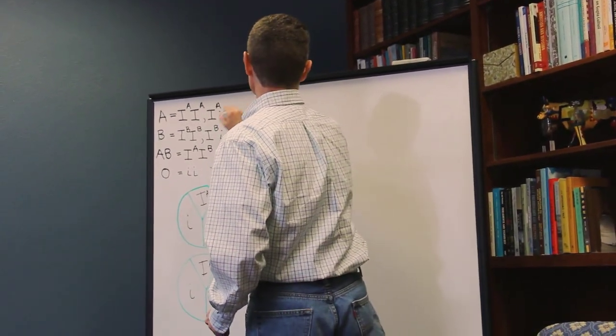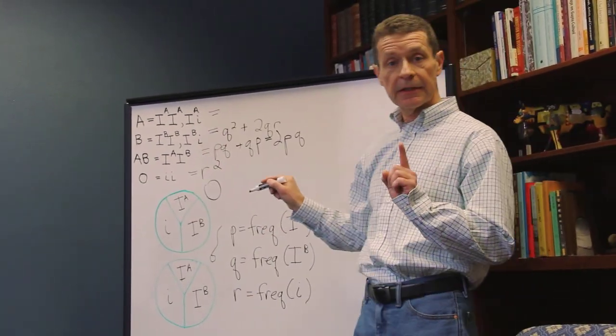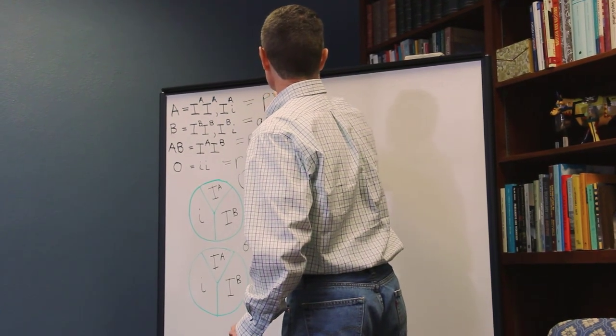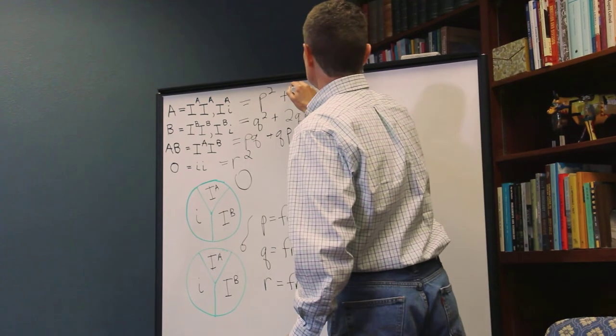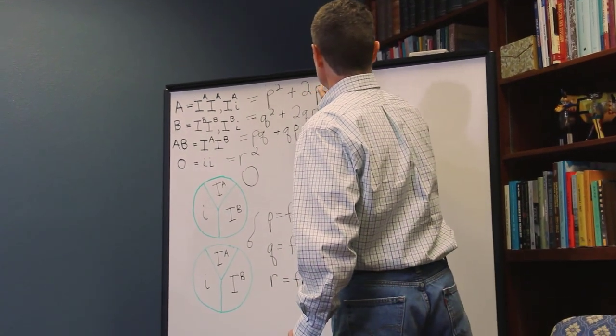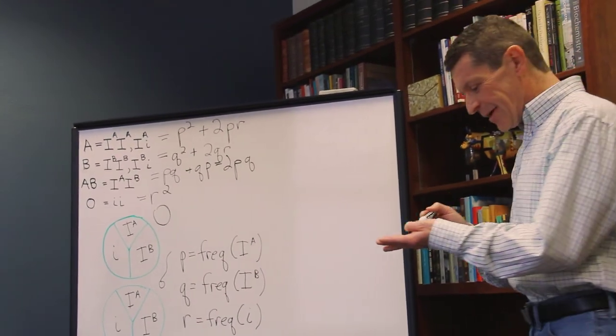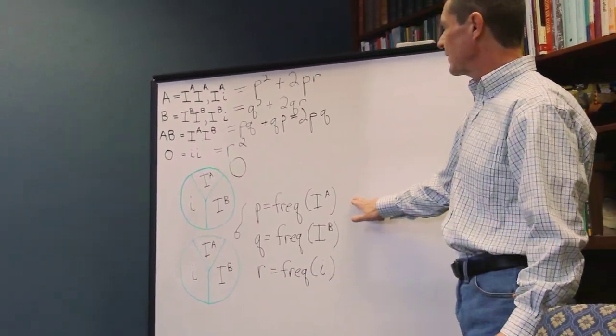And then finally, you can probably see that this is going to be probability of a homozygote, P squared, plus probability of the heterozygote, 2PR. So, in answer to your question, Steve, if you know these frequencies, you can figure out the blood type frequencies.